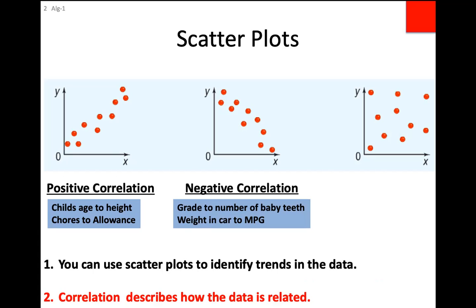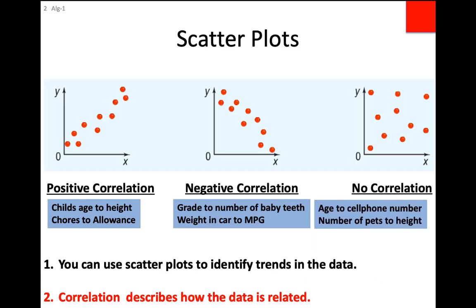What's the correlation when there's no pattern? We literally call that no correlation. For example, what's the correlation between your cell phone number and your age? There isn't any — your cell phone number depends on where you buy your phone and has nothing to do with how old you are. The number of pets versus your height — how tall you are has nothing to do with how many pets you have.